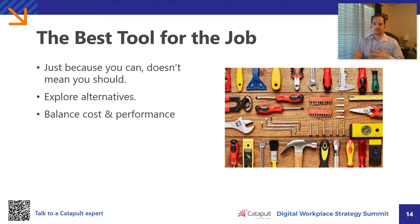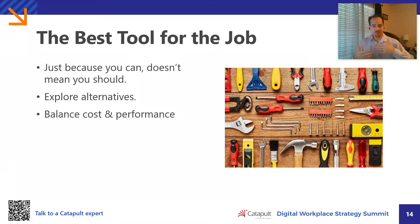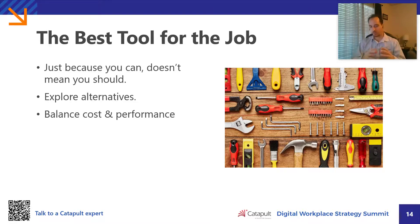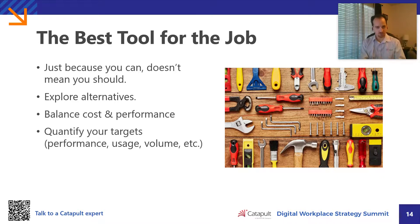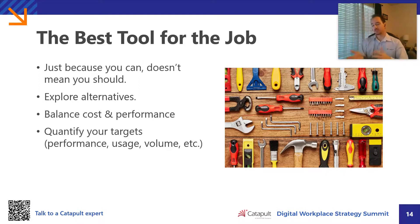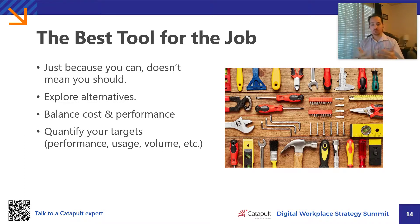Another key aspect that Catapult consultants always take into consideration is cost and performance. Obviously, if money didn't matter, it would be easy to just throw it at a problem or provide an overkill solution. But cost-effective solutions require a bit more nuance and finesse. Quantifying your targets is also very important — there's little point in taking all that time to measure the current state unless you're going to leverage that to set goals for your new target system. For instance, you may want targets around performance, cost, usage, storage, and even user sentiment.